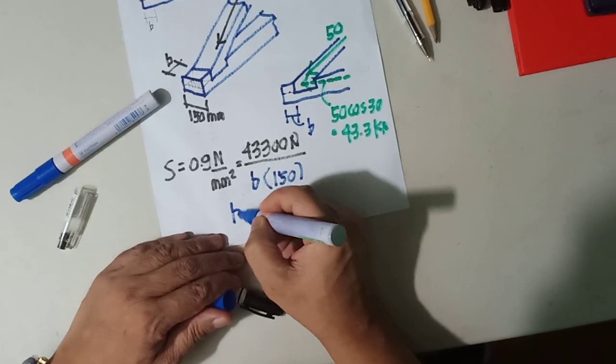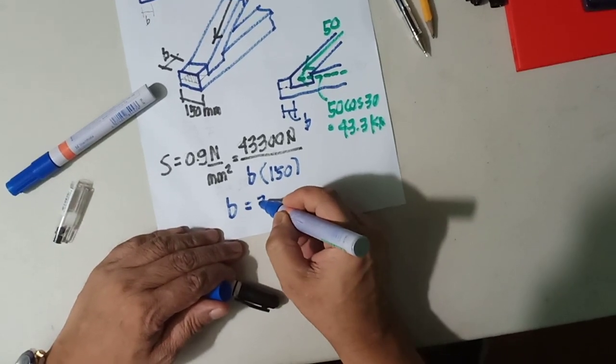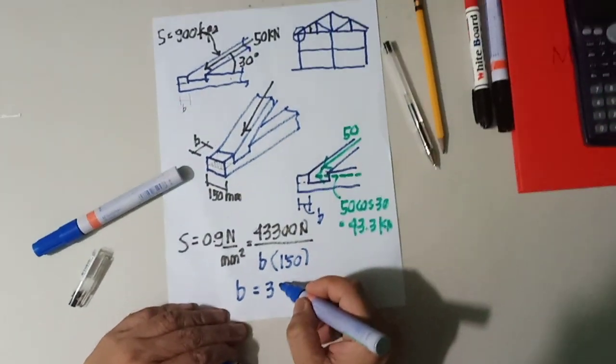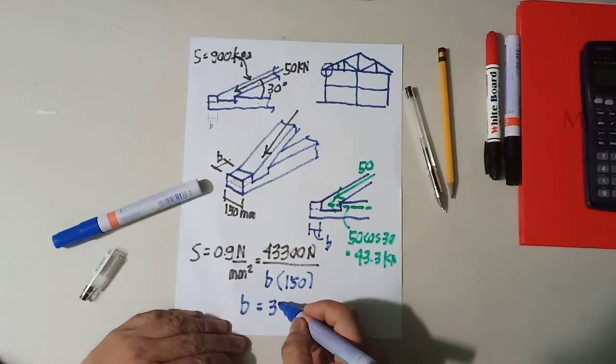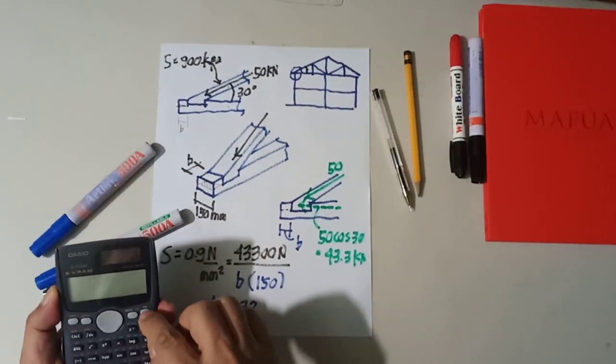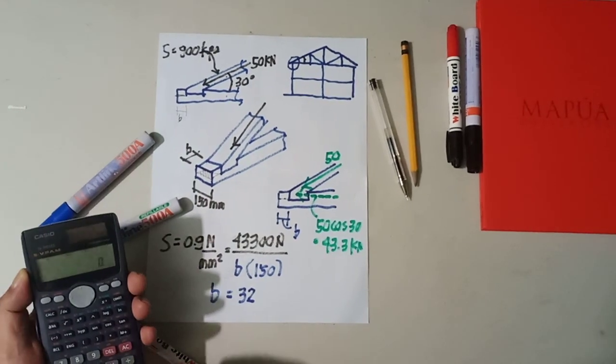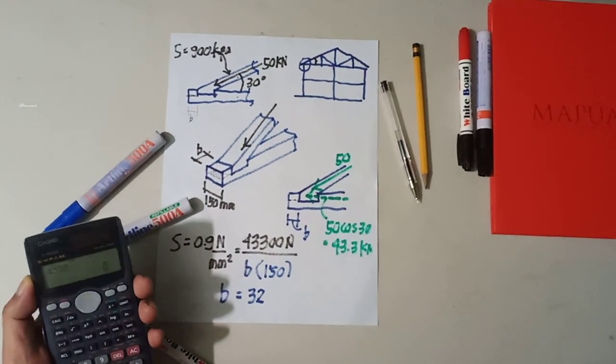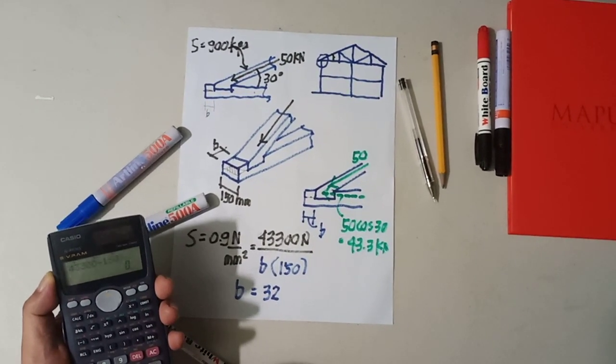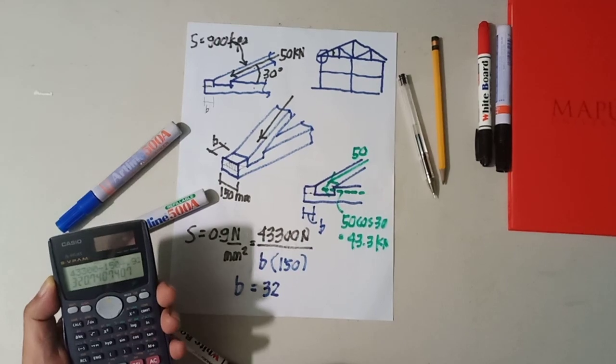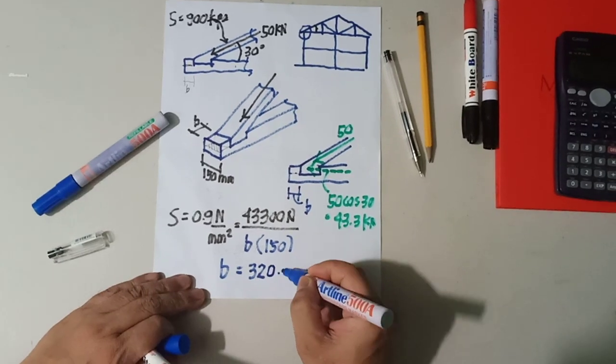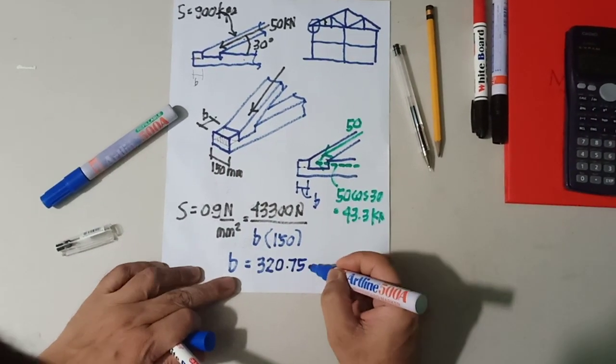Thus giving you a result of B equivalent to 320. Let me compute. It is 43,300 divided by 150, divided by 0.9, which is equivalent to 320.75 millimeters.